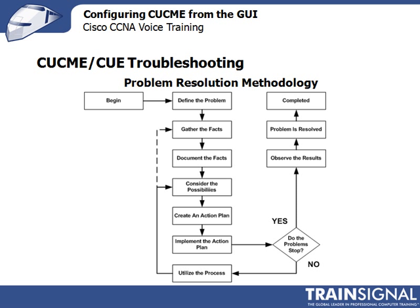Once you have the action plan implemented, ask yourself: are the problems stopped? Make sure the problem is actually solved. If it is, figure out what the results are, document how you did that, where it came from, and then you're done. If it doesn't resolve, go back. Figure out your next best idea and your third best idea. If you've exhausted all those, you may have to go back to the fact-gathering phase. But this particular model will really serve you well in a network troubleshooting situation.